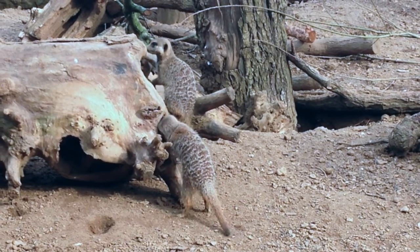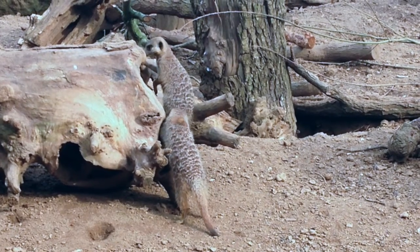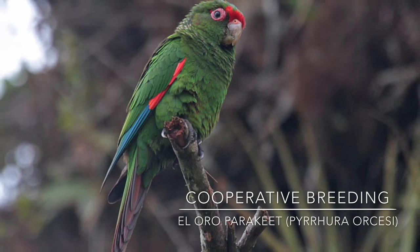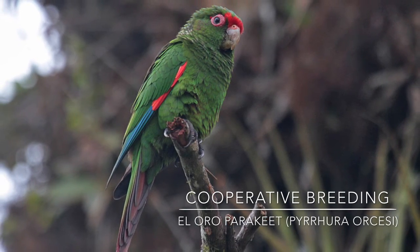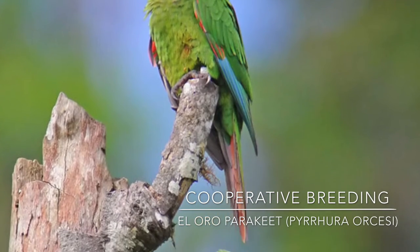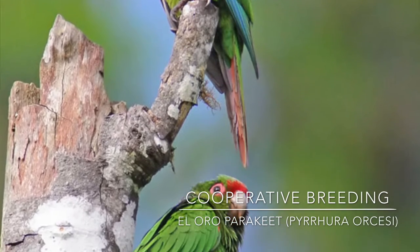And our first case study of the El Oro parakeet determines why helping kin is so important. The El Oro parakeet is an endangered species of parrot endemic to several small fragmented habitats in Ecuador. They are one of the only known species of parrot to co-operatively breed. But why do they do this?